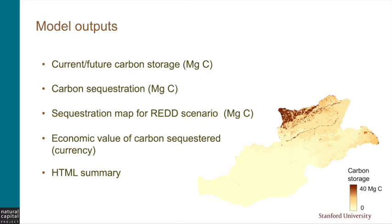The main output is a map of carbon stored in the landscape. You get one carbon storage map for each point in time for which you provided a land use land cover map. If you gave several points in time, you'll also get the carbon sequestered — the difference — as well as sequestration maps for REDD scenario analysis if you provided REDD policy maps. If you provided all the inputs for economic valuation, you also get a map of the economic value of carbon sequestered in the currency of your choice. The model also provides an HTML summary of results.